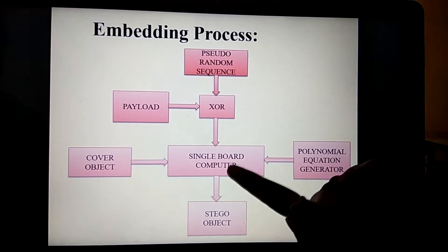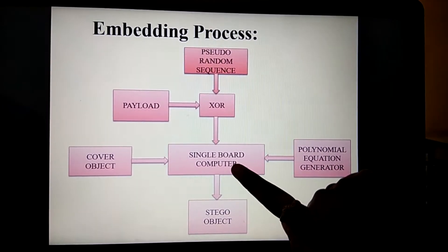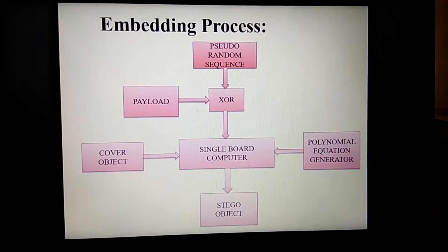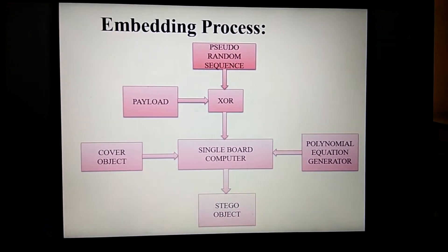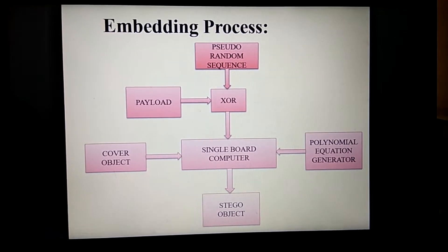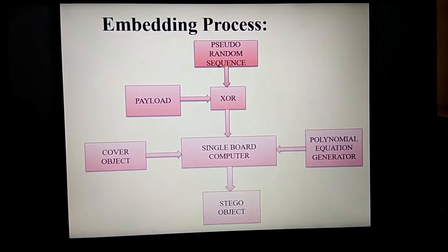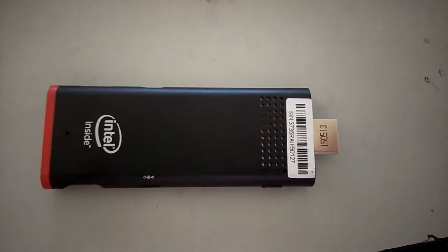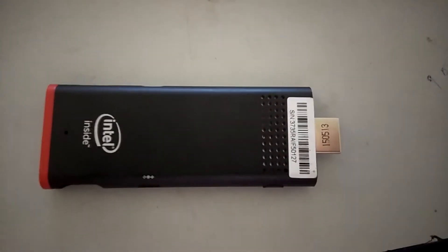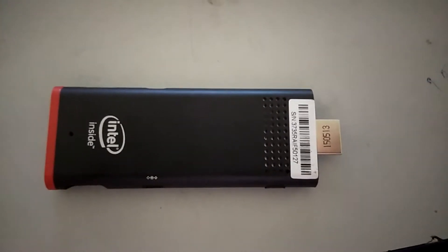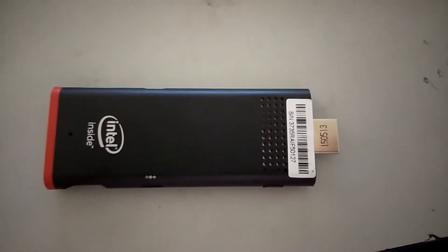The coded data is given to the Single Board Computer. A Single Board Computer is a complete computer built on a single circuit board with microprocessors, memory, input/output, and other features. Here we are using the Intel Compute Stick, a new-generation computer-on-a-stick device that is essentially a complete PC in the compact form of a slightly large pen drive.